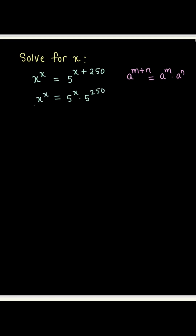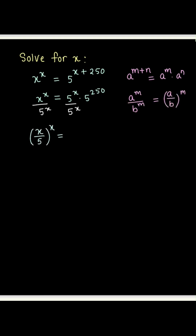The reason we did this is so we can divide both sides of the equation by 5 to the power x in the next step, so we can bring all the terms containing x on one side of the equation, which is the left-hand side in this problem. So now we have x over 5 to the power x equals 5 to the power 250.